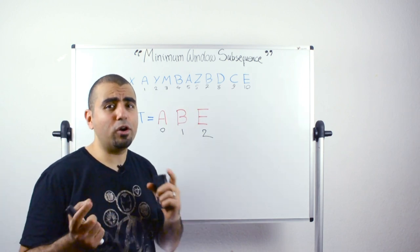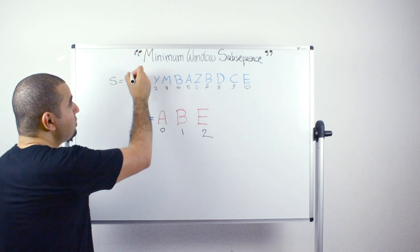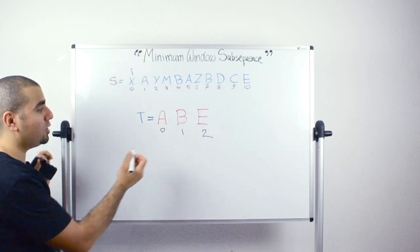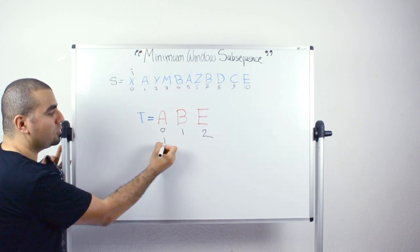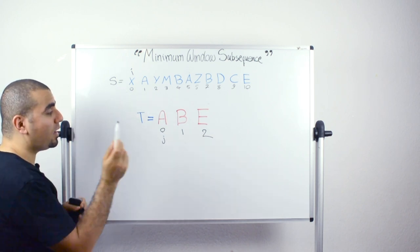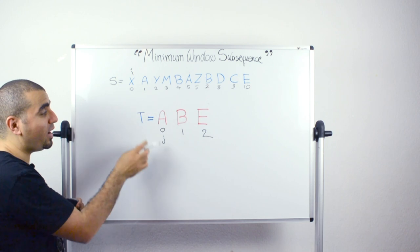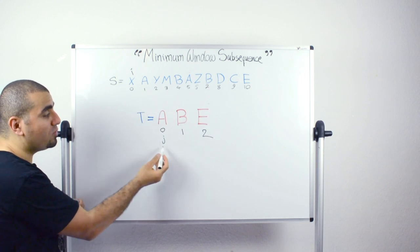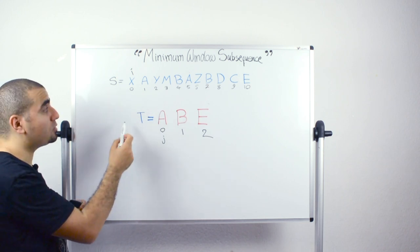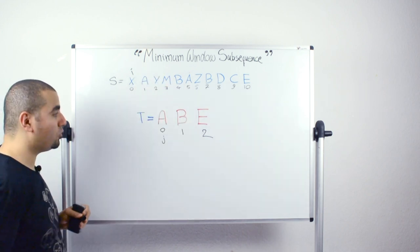We will be using the two pointers idea. We introduce a variable called i and another variable called j, and we start iterating through the longer string and the shorter string. Every time we find a match we move the j pointer to the next. If we don't find a match we still move i to the next character.